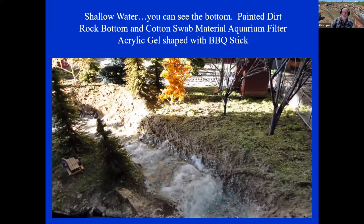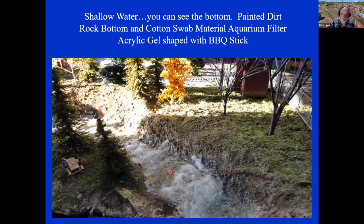Here's a close-up of shallow water using the acrylic — you can still see all the stones and wood and whatever's underneath, and there's a roughness about it. You've got rapids and the water crashing over with speed, motion, and movement. You can do this with the material: the aquarium filter, the gel, and the barbecue stick.